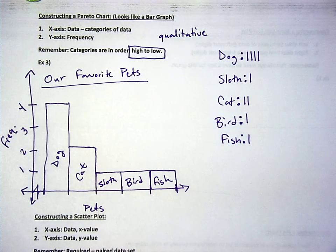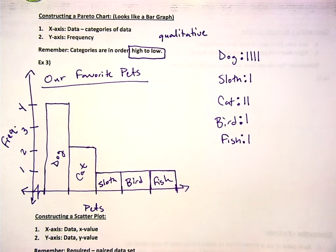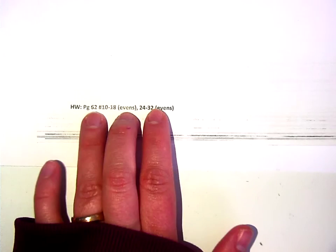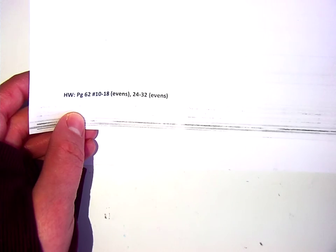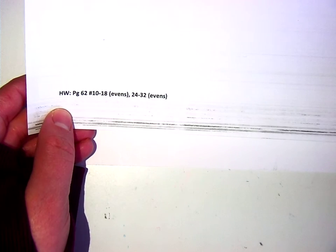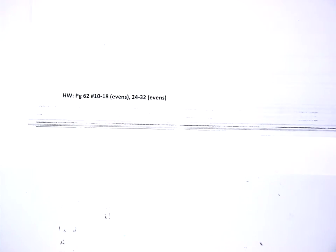Are we good on these three? Tomorrow, we're going to do scatter plots and time series charts and dot plots, which are very fast. And you've got the rest of the hour to start working on this homework assignment right here. Page 62, 10 through 18, evens. 24 through 32, evens.